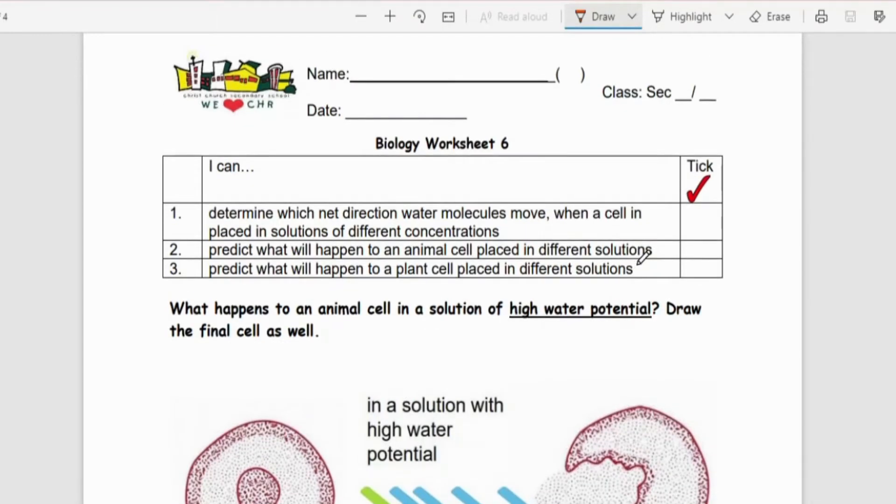Okay, so this is Movement of Substance Worksheet 6. So by the end of this, you should be able to determine the net movement of water molecules when a cell is placed in a solution of different concentration.